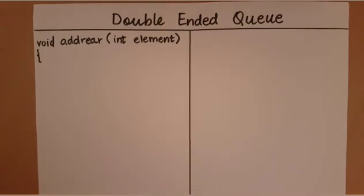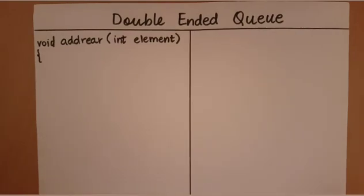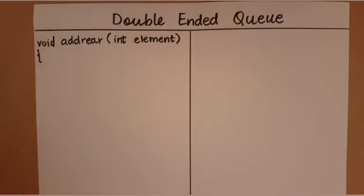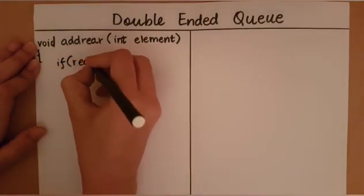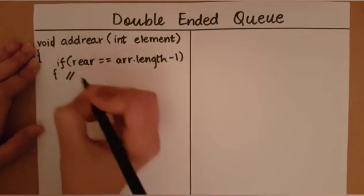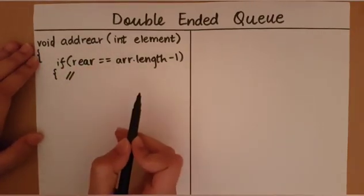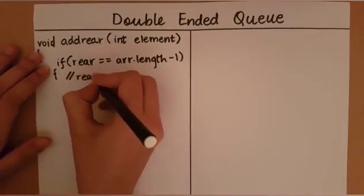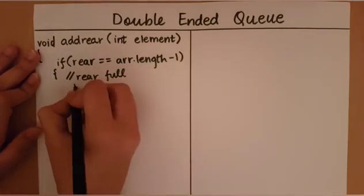The first thing I must check when adding to the rear of the queue is whether the queue is full. Since I am only adding to one end, I need to check if that end particularly is full. We say the rear is full when rear is equal to the last index of the queue — that is, array.length minus one. In such a case there is no scope for adding an element, so we return from the function.